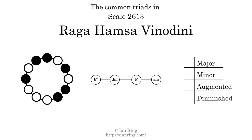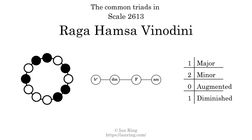Here are the common triads present in this scale. The diagram in the center is a graph of parsimonious voice leading between triads. There is one major triad. There are two minor triads. There are no augmented triads. There is one diminished triad. Here is a Hamiltonian path of parsimonious voice leading that uses all the triads.